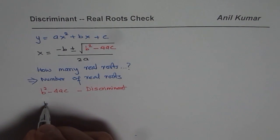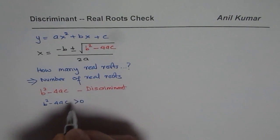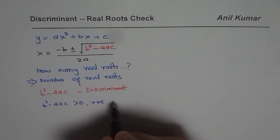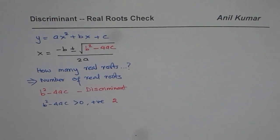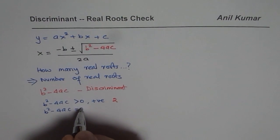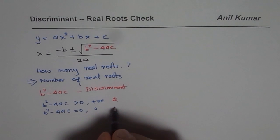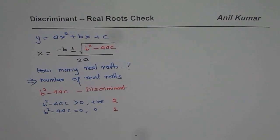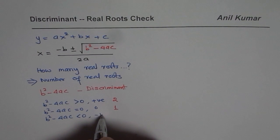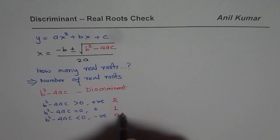If b squared minus 4ac is greater than 0, meaning it is positive, then the number of roots is 2. If b squared minus 4ac is equal to 0, then the number of roots is just 1. But if b squared minus 4ac is less than 0, or negative, then the number of real roots is 0 — no real roots.